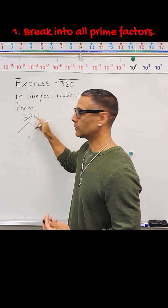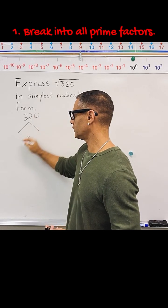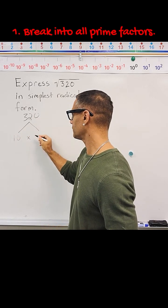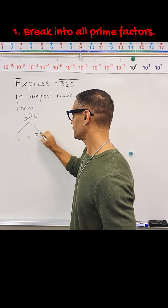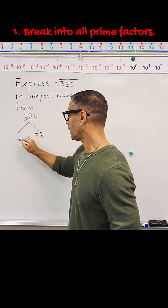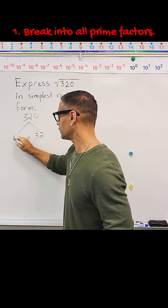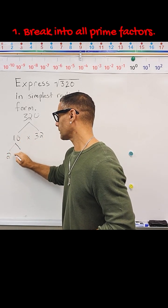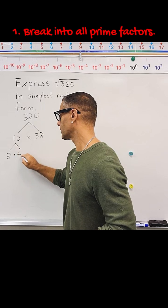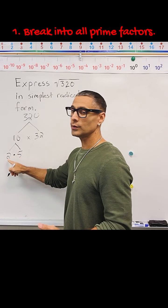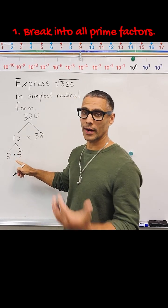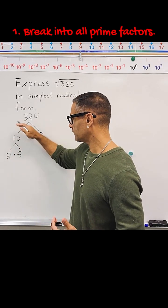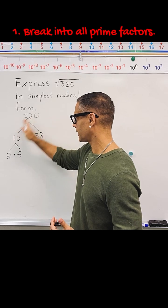Because this ends in a zero, we know that we can use 10. So I'm going to write 10 times 32. Next, what we're going to do is break 10 down even further into 2 times 5. Now, 2 and 5 are both prime numbers, so we can stop with this branch of our factor tree.